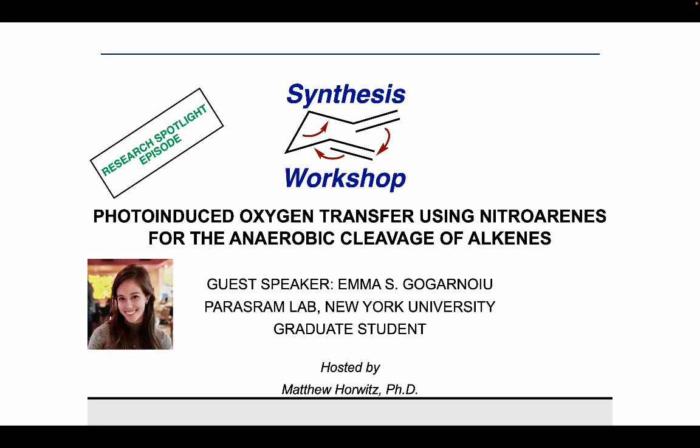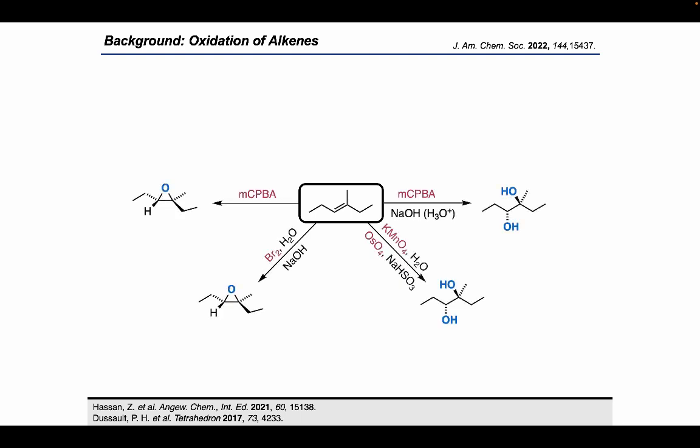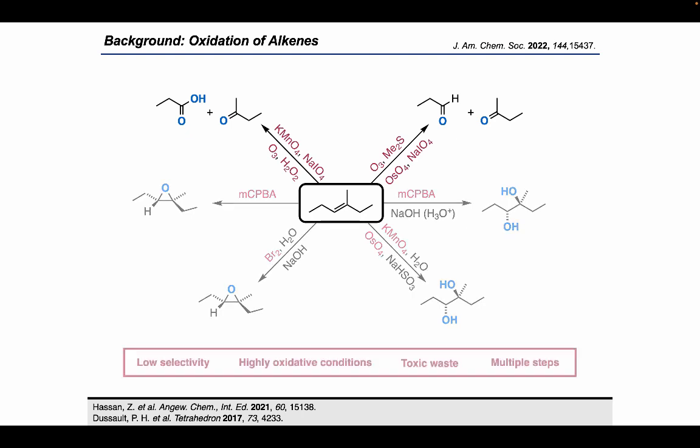Thank you for the introduction and for having me today. I'm excited to talk about our lab's most recent work on photo-induced oxidative cleavage of alkenes. Alkenes are one of the most important chemical feedstocks due to their widespread availability and their diverse reactivity. Included in this reactivity is oxidation. There are many ways to oxidize alkenes, such as epoxidation, dihydroxylation, and importantly, oxidative cleavage to yield valuable carbonyl compounds. Carbonyls are heavily featured in natural products and in pharmaceutical drugs. However, these traditional methods for cleavage are wrought with low selectivity, highly oxidative conditions that produce toxic waste, and usually require multiple steps.